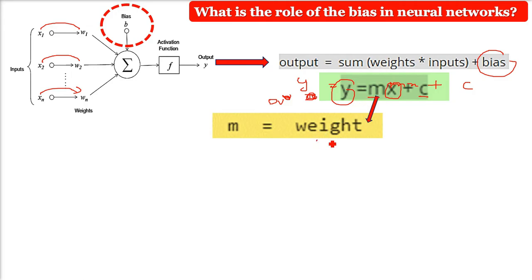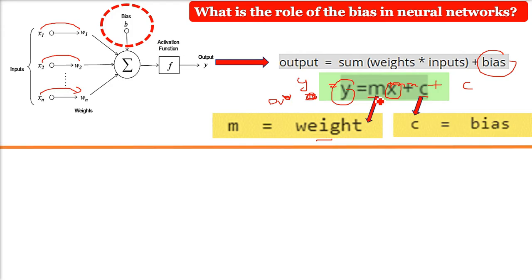M is corresponding to the weight, and c is corresponding to the bias. But what will happen if we don't give the bias, that is c? This will be y equals mx with zero bias. What will happen?